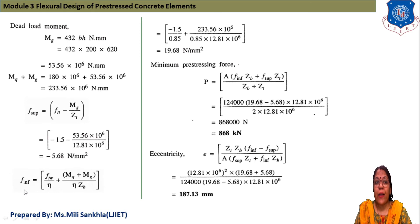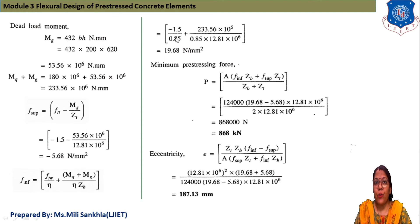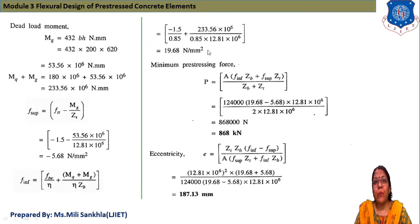Then we find f_inf (bottom fiber stress): f_inf = f_tw/η + (M_Q + M_G)/(η·Z_b). Substituting: (−1.5)/0.85 + 233.56 × 10⁶/(0.85 × 12.81 × 10⁶) = 19.68 N/mm².